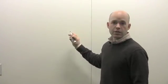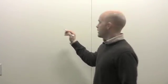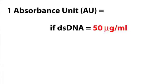So the easiest way to do it is to take advantage of a shortcut which states that one absorbance unit, if it's double-stranded DNA, will equal 50 micrograms per mil.